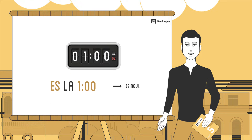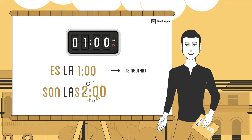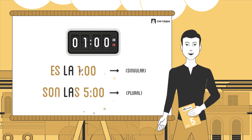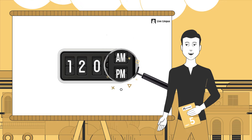This is because the number 1 is singular, as opposed to 2, 3, 4, 5, which are plural. The final detail you'd need to add is simply saying a.m. or p.m.